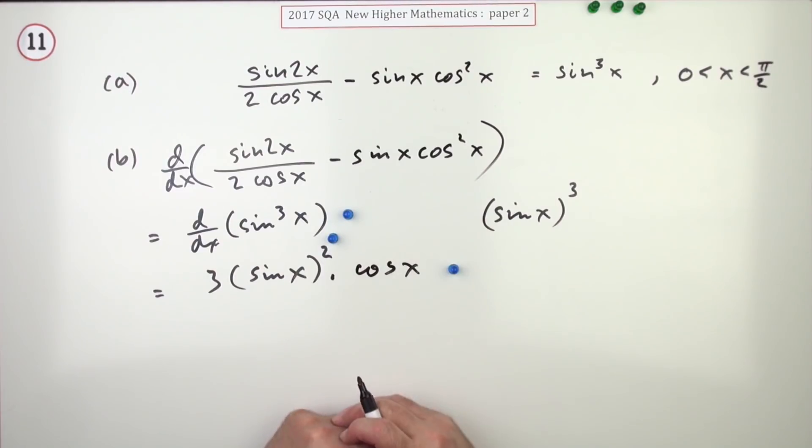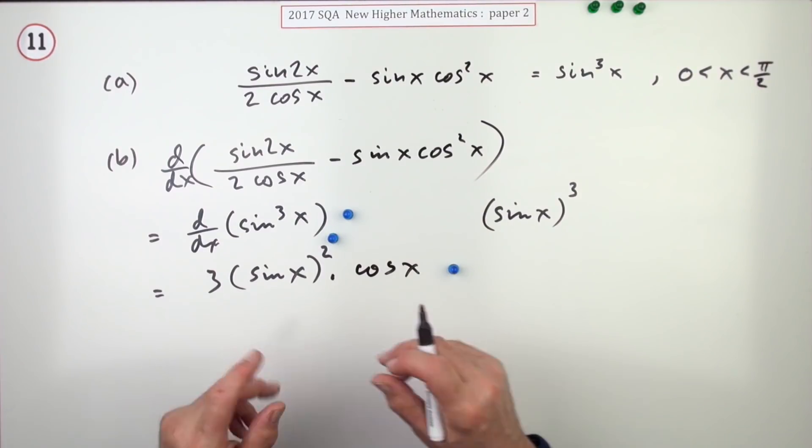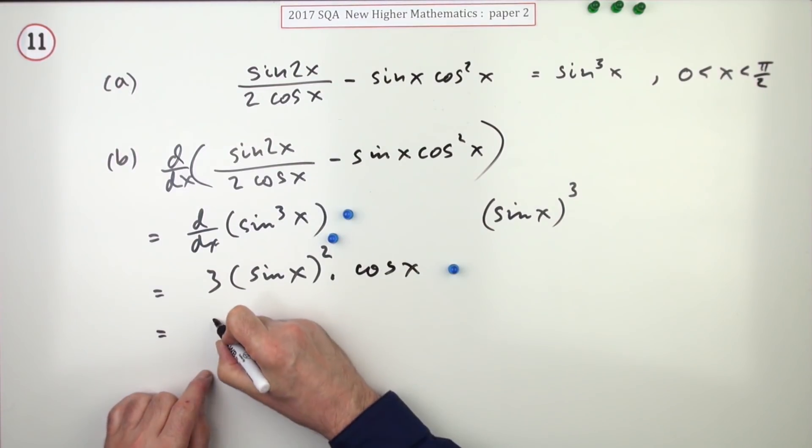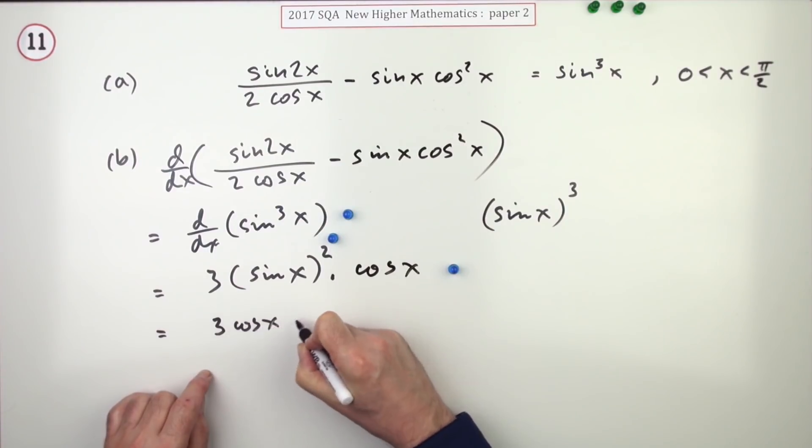And apparently that gets the second mark without needing to rearrange it into any order. I think I'll just finish it off, so that's 3 cos x sine squared x.